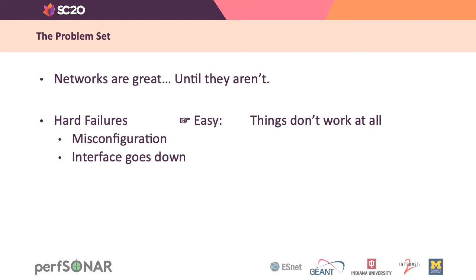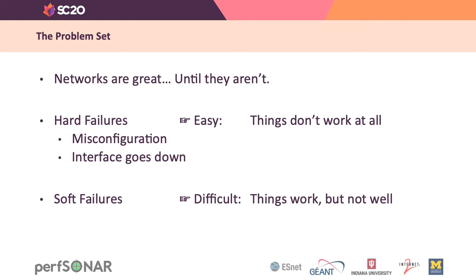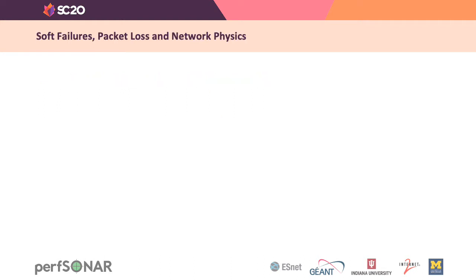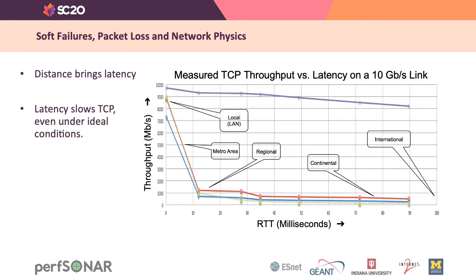The second category of failures is soft failures, and those are difficult to deal with because when you're having a soft failure, things work, but they don't necessarily work well. The typical types of things that cause soft failures are things like devices that have buffers that are overflowing and dropping traffic, or dirty optics that prevent traffic from getting through. Soft failures tend to be governed by packet loss, latency, and what I like to call network physics. Real physics tells us that distance brings latency, and latency slows TCP even under ideal conditions.